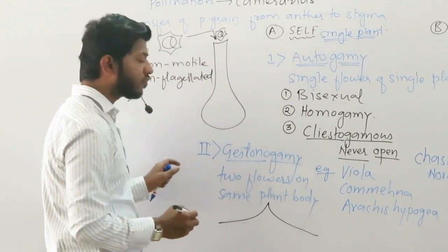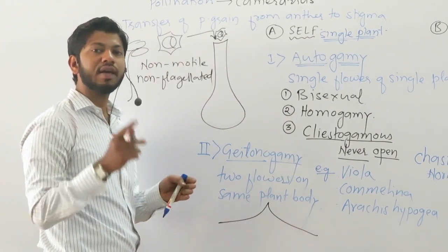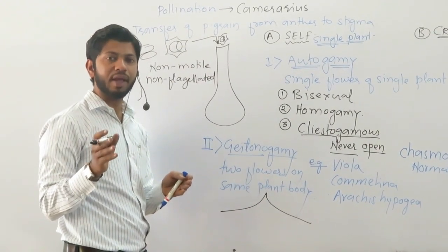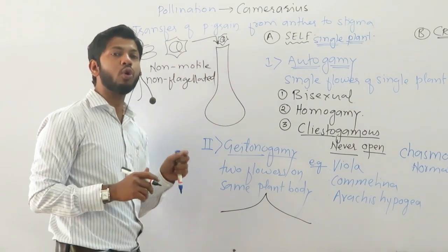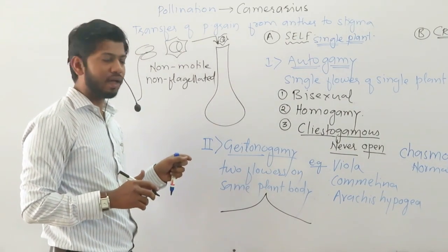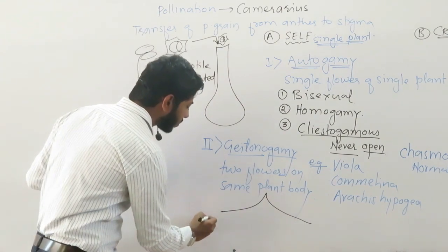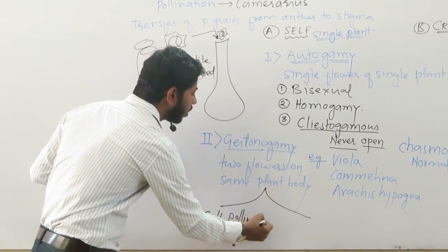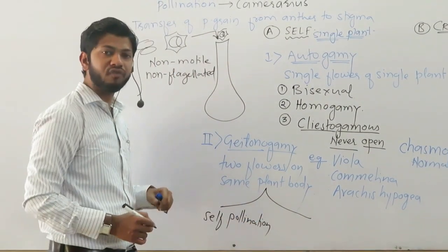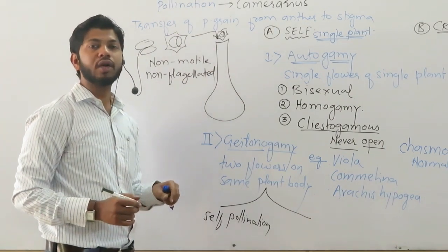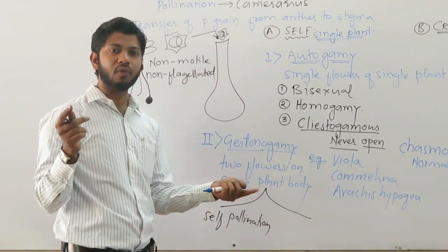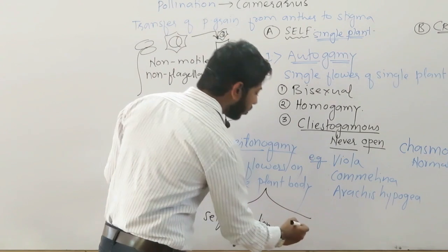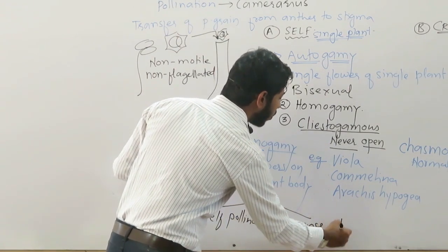If genetic material does not change — since a single parental plant body has similar genetic material in the pollen grain inside the male gamete as well as the female gamete — due to no variation in genetic material, geitonogamy is known as self-pollination. But for transporting pollen grain from one flower to another flower, a pollinating agent is required; that's why on the basis of pollinating agent, geitonogamy is known as cross-pollination.